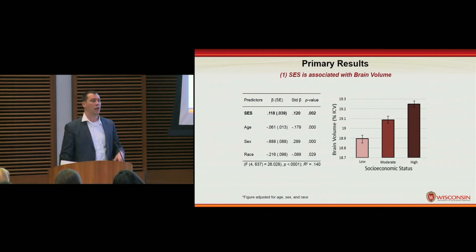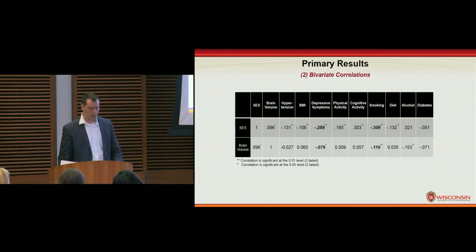Because our primary hypothesis was supported, we were able to proceed with investigating potential mediators. Here we have the correlation matrix of our nine potential lifestyle factors in the top row, and then SES and brain volume on our column here to the left.